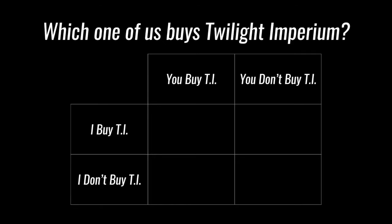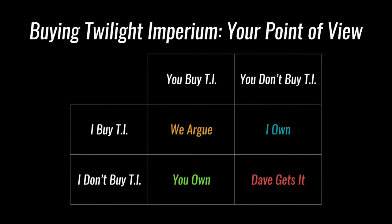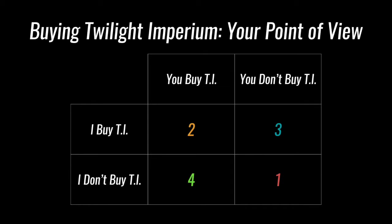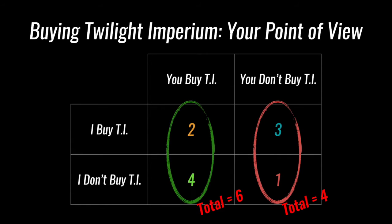It's kind of like watching an Olympic race, but instead of tracking how long it takes people to finish, you just award people medals — first, second, and third — and that's it. So from best to worst for you: you own it, then I own it, then we argue, and then Dave gets it. We can just call these 4, 3, 2, and 1. So now we can look at the totals of each column. Overall, you will be happier if you buy it, with a total of 6 against 4.